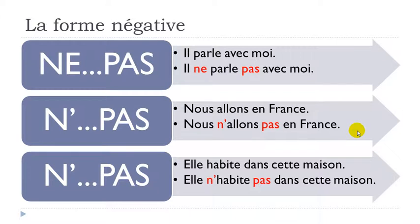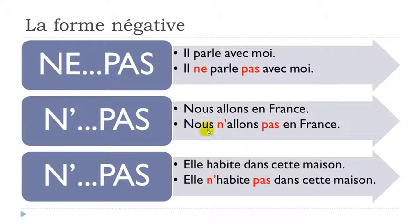Second example with the verb 'habiter', which means to live — where you live. This verb starts with H, but since H is not pronounced in French, the first sound you hear is a vowel. So again you drop the E from 'ne'. Take 'elle habite dans cette maison' and make it negative: 'elle n'habite pas dans cette maison'.